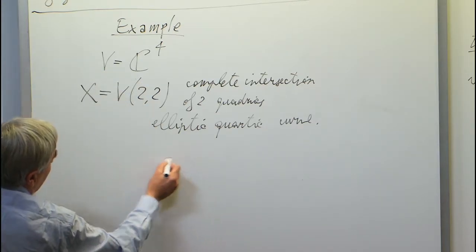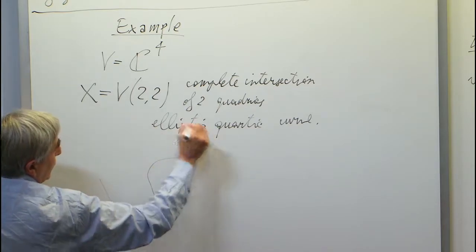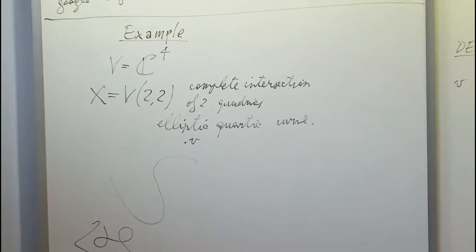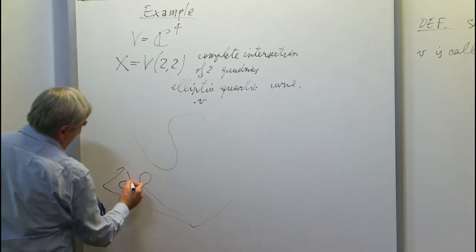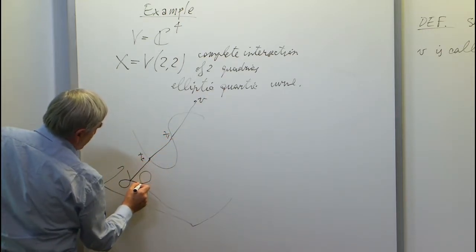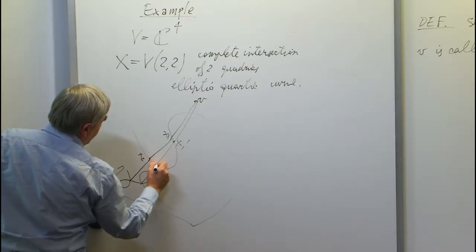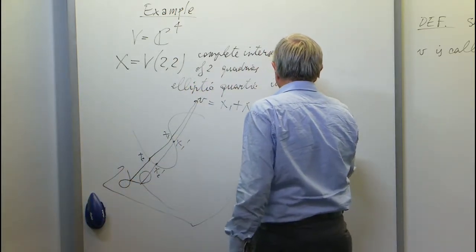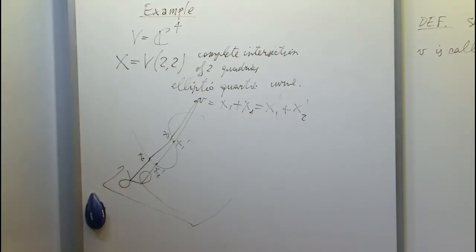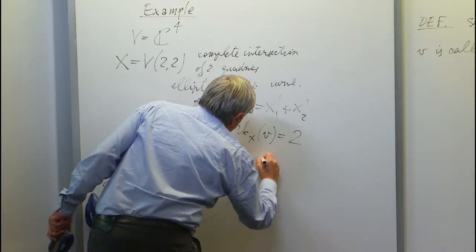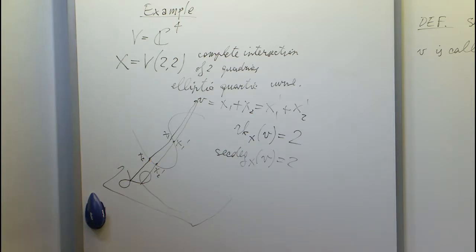The drawing looks the same at first: take V and project. Now the genus is 1, so you get a plane curve of genus 1 with 2 double points — 2 nodes. For general V, this is the projection, and you get x₁, x₂ and x₁ prime, x₂ prime. You have two possibilities, giving two decompositions. The rank with respect to X of V is 2, and the secant degree is 2 because you have 2 minimal decompositions.